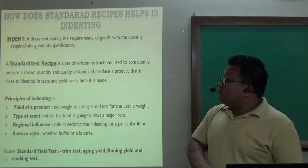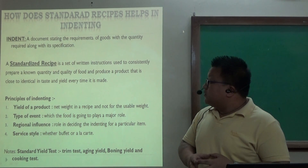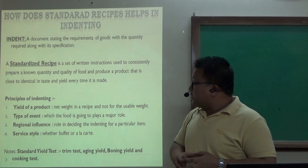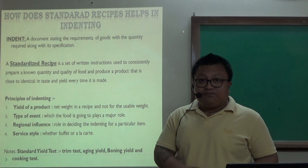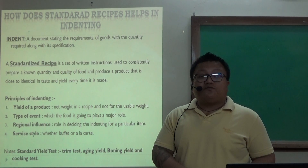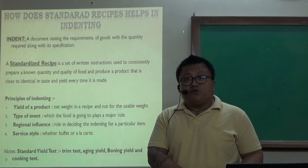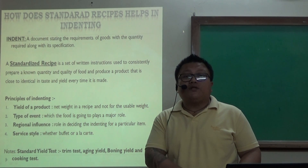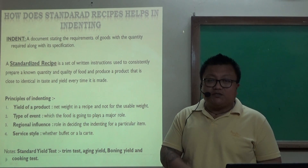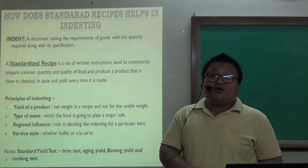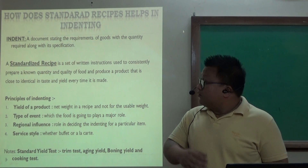How does a standard recipe help in indenting? The first thing we need to talk about is the principles of indenting. The principles of indenting are: yield of a product, type of event, regional influence, and service style. Yield of a product — for example, if we want deboned meat, we need to purchase more quantity. A kilo of meat with bone will give you around 450 to 500 grams of deboned meat, and that is the yield — the net weight that we are going to use.